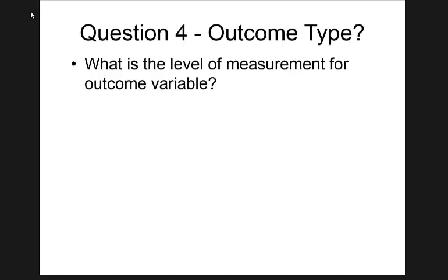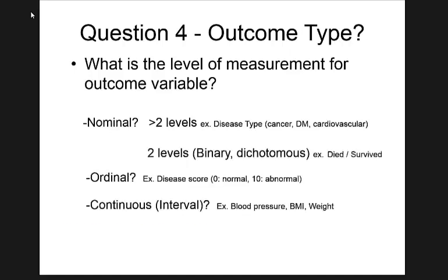Question four: type of outcome. What is the level of measurement for the outcome variable? We have three types: continuous variables like blood pressure, cholesterol, or dose of drug; binary variables like death vs. alive, which have two levels; and categorical variables with three or more categories, which can be ordinal (mild, moderate, severe) or nominal (hair color — no inherent order).